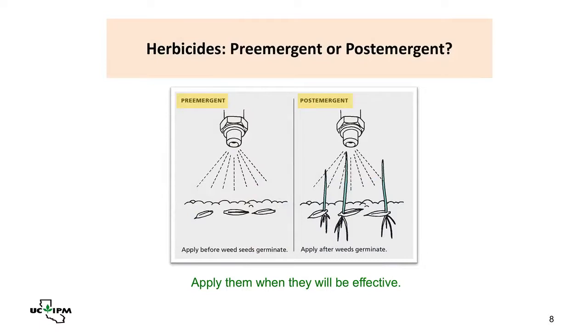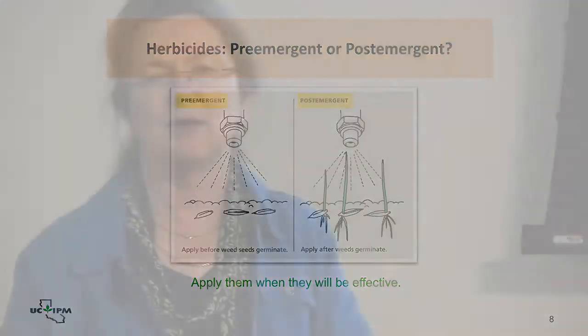Another important distinction for herbicides is pre-emergent versus post-emergent. Pre-emergent herbicides kill weeds just as they're germinating, so you apply them before germination. Post-emergent herbicides must be applied to the leaves of already-growing weeds. If you apply a pre-emergent herbicide after the weeds have already started growing, it's too late.